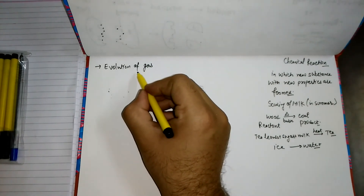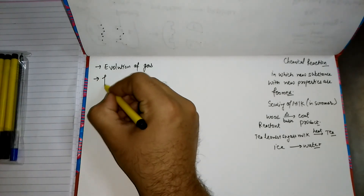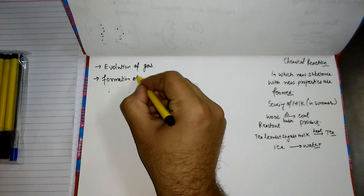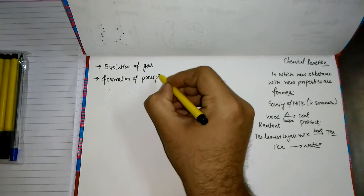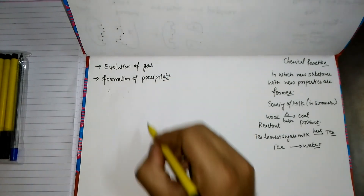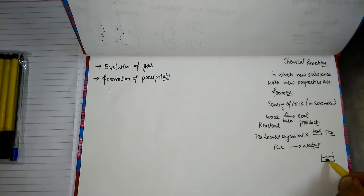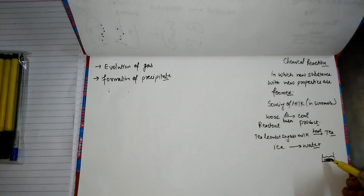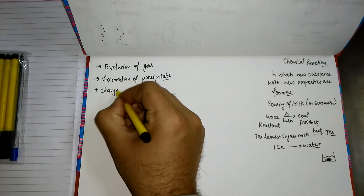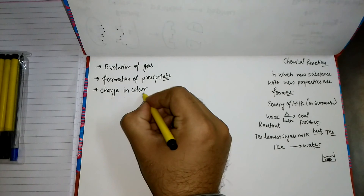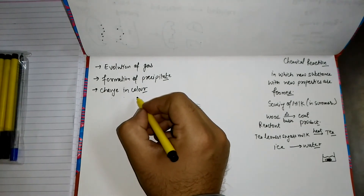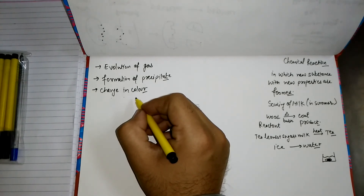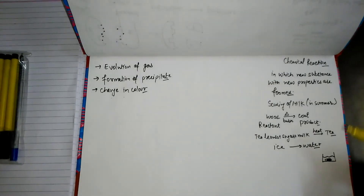If there is a formation of a precipitate — a substance left behind as a residue on the product side, like tea leaves acting as a precipitate — we say a chemical reaction takes place. If there is a change in color, we also call it a chemical reaction. A piece of iron becomes reddish-brown when exposed to humid air, indicating a new substance is formed.